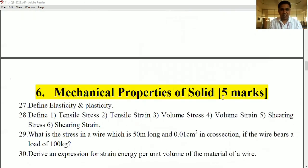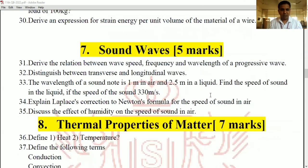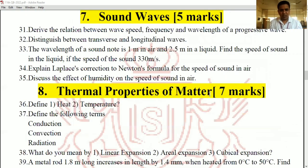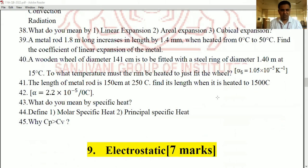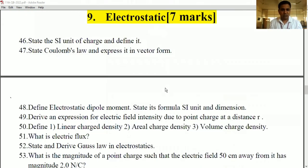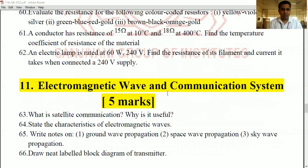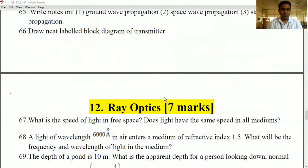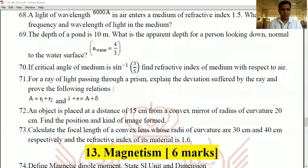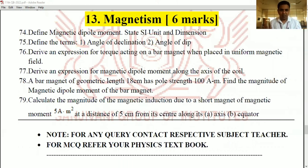Now gravitation for five marks, mechanical properties of solid that is elasticity for five marks, sound waves for five marks, thermal properties of matter for seven marks, electrostatic seven marks, current electricity six marks, electromagnetic waves and communication for five marks, ray optics for seven marks and magnetism six marks. So this is how I have given the weightage to each chapter. And in every chapter I have given you six to seven questions. So it will be very easy for you to prepare well.